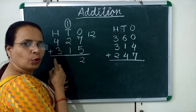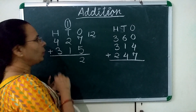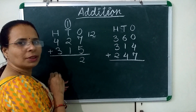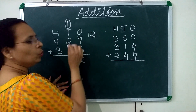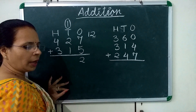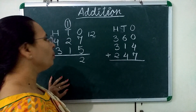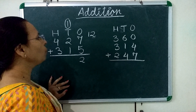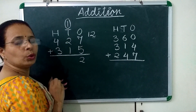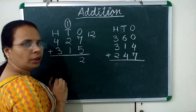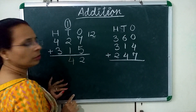Now we will move to the 10's place. The 10's place numbers are 1 and 2. We will add 1 plus 2 plus 1 (the carry). 1 plus 2 is 3, and 3 plus 1 is 4.